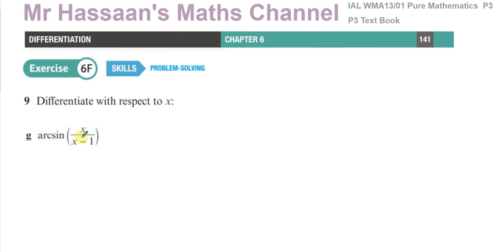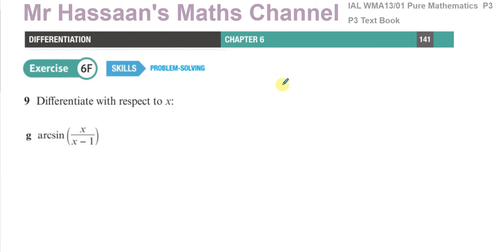They asked us to differentiate y equals arc sine of x over x minus 1 with respect to x. What I'm going to do first is assume we don't know what the differential of arc sine of x is, and start off as if we didn't know that.